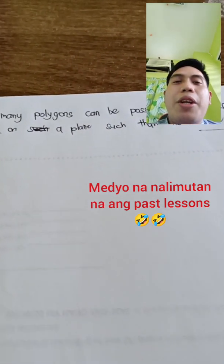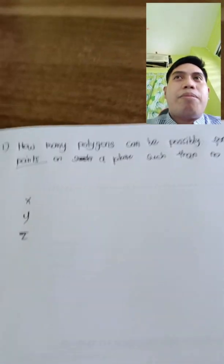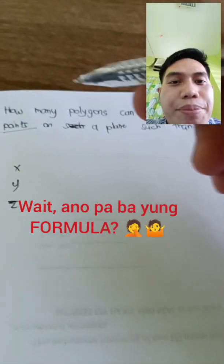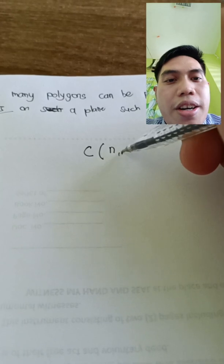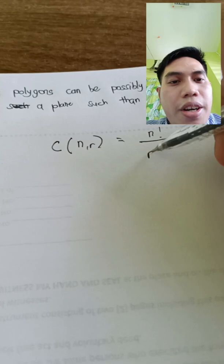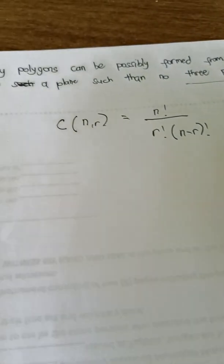When we say arrangement or the order is not important, it's actually a combination. Yes, combination. Combination has a formula of C(n,r) is equal to n factorial all over r factorial times (n-r) factorial.